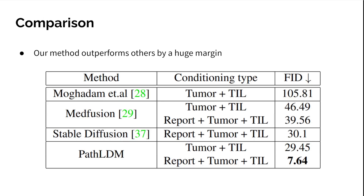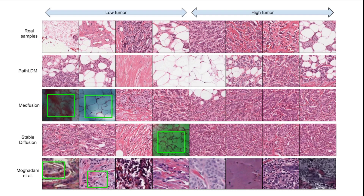Here is a qualitative evaluation. We choose a single text report and produce synthetic samples using various methods. The first row contains real samples from the corresponding whole slide image. Samples generated by our method in the second row are highly realistic and closely resemble the real samples, whereas samples generated by other methods exhibit artifacts indicated by green boxes that are not present in our method.